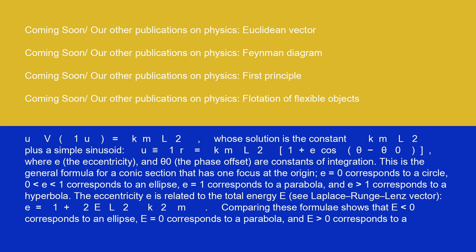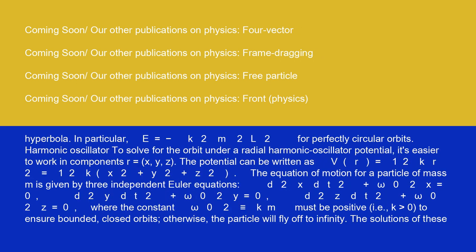This is the general formula for a conic section that has one focus at the origin. e equals 0 corresponds to a circle, 0 < e < 1 corresponds to an ellipse, e equals 1 corresponds to a parabola, and e > 1 corresponds to a hyperbola. The eccentricity e is related to the total energy. Comparing these formulae shows that E < 0 corresponds to an ellipse, E equals 0 corresponds to a parabola, and E > 0 corresponds to a hyperbola. In particular, E equals minus k²/(2m²L²) for perfectly circular orbits.